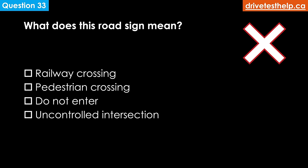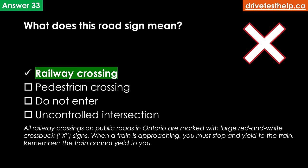What does this sign mean? Options: railway crossing; pedestrian crossing; do not enter; uncontrolled intersection. The correct answer is railway crossing. All railway crossings on public roads in Ontario are marked with large red and white crossbuck X signs. When a train is approaching, you must stop and yield to the train — remember, the train cannot yield to you.